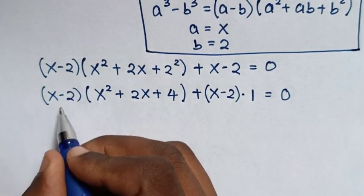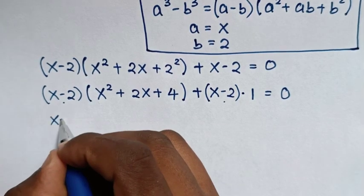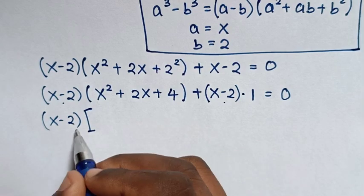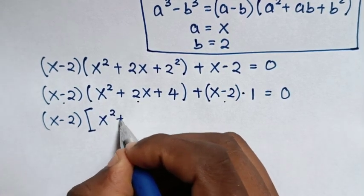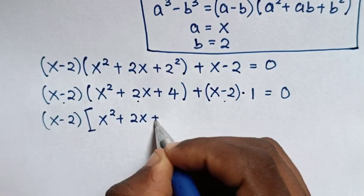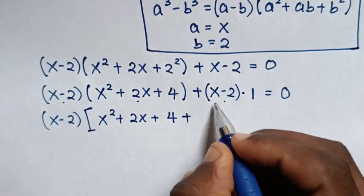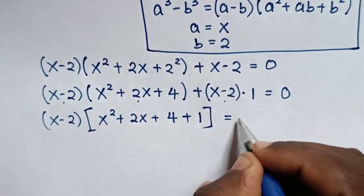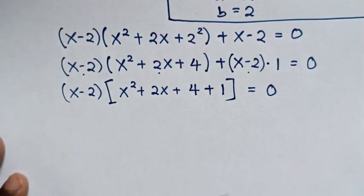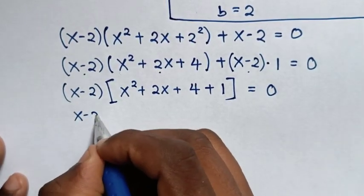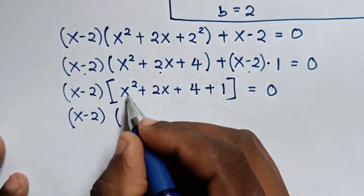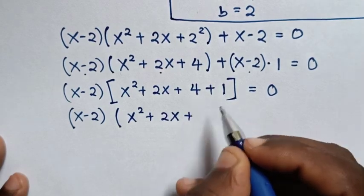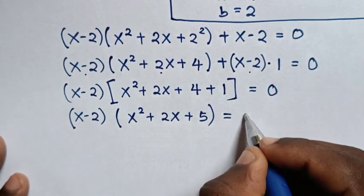Then in the next step, (x minus 2) is common, so we take (x minus 2) out of the bracket. This divided by this gives x squared plus 2x plus 4, then plus 1, bracket is equal to 0. Then our equation will be (x minus 2) times (x squared plus 2x plus 4 plus 1 is 5) is equal to 0.